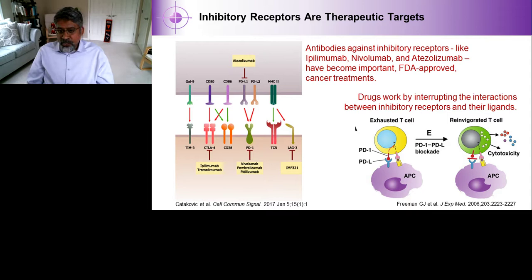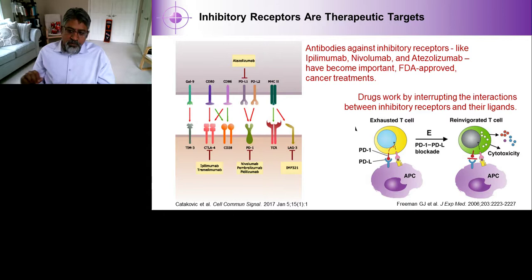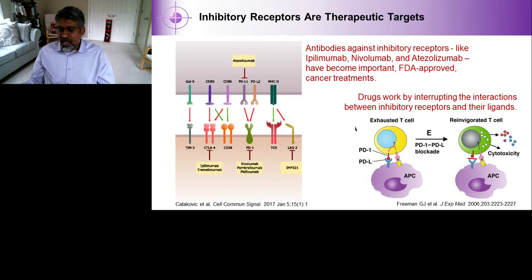These inhibitory receptors are actually therapeutic targets. Antibodies against inhibitory receptors — like ipilimumab, nivolumab, and atezolizumab — have become important FDA-approved cancer treatments and are the focal point of modern immunotherapy. These drugs work by interrupting the interactions between inhibitory receptors and their ligands. For example, PD-1 interacts with PD-L1, but when you give anti-PD-1 or anti-PD-L1, you can end up reinvigorating that T-cell, releasing it to restore function.